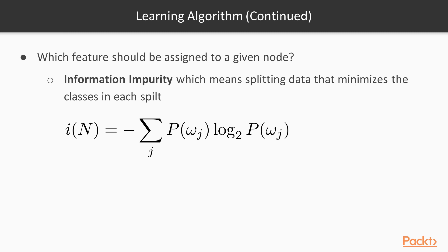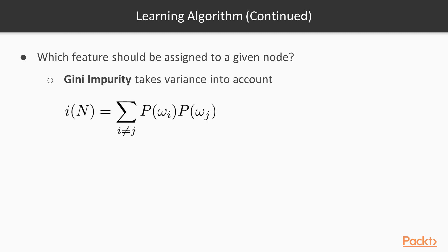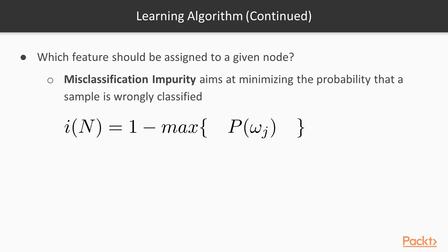Gini impurity is another measure of impurity at a given node which takes variance into account. Misclassification impurity aims at minimizing the probability that a sample is wrongly classified. The equation is inversed since any probability is equal to one, so the minimum probability of a wrong classification is equal to one minus the maximum probability of a correct classification.